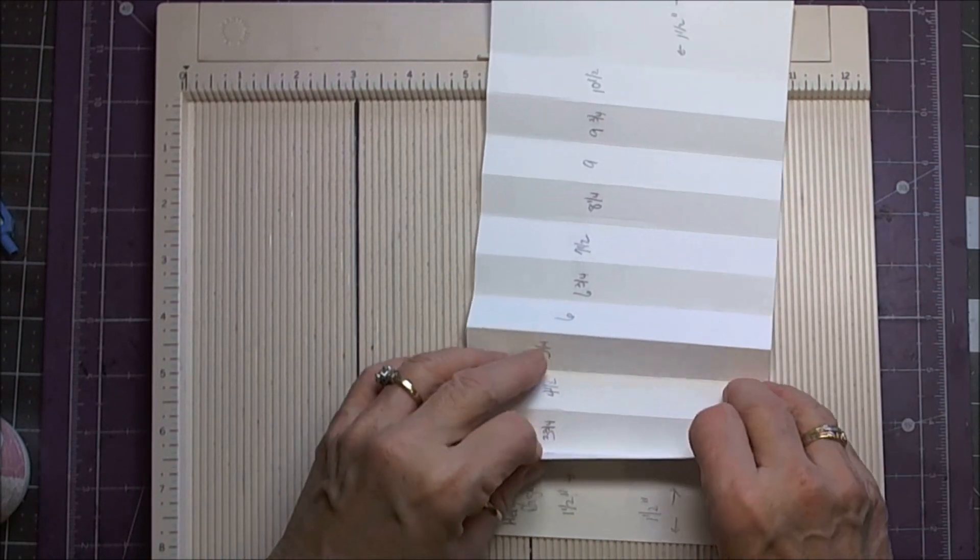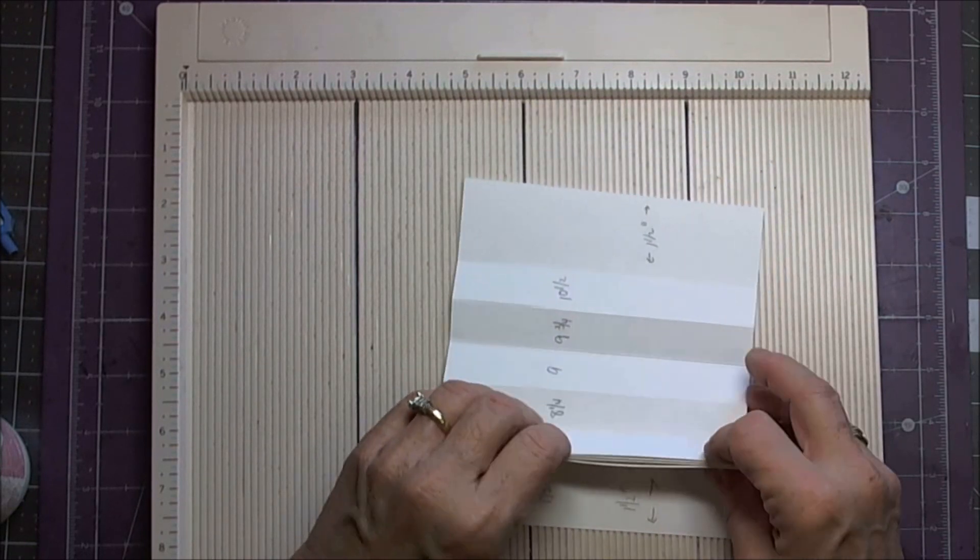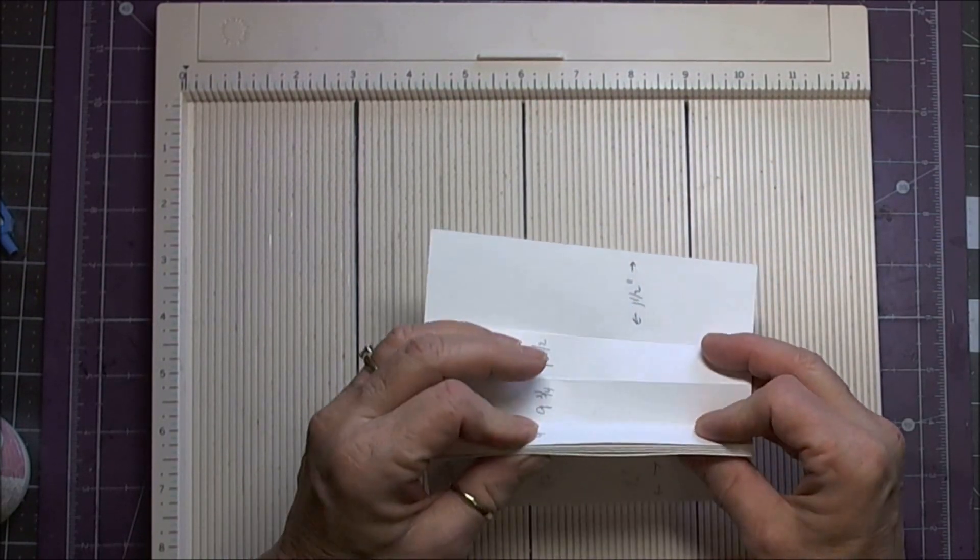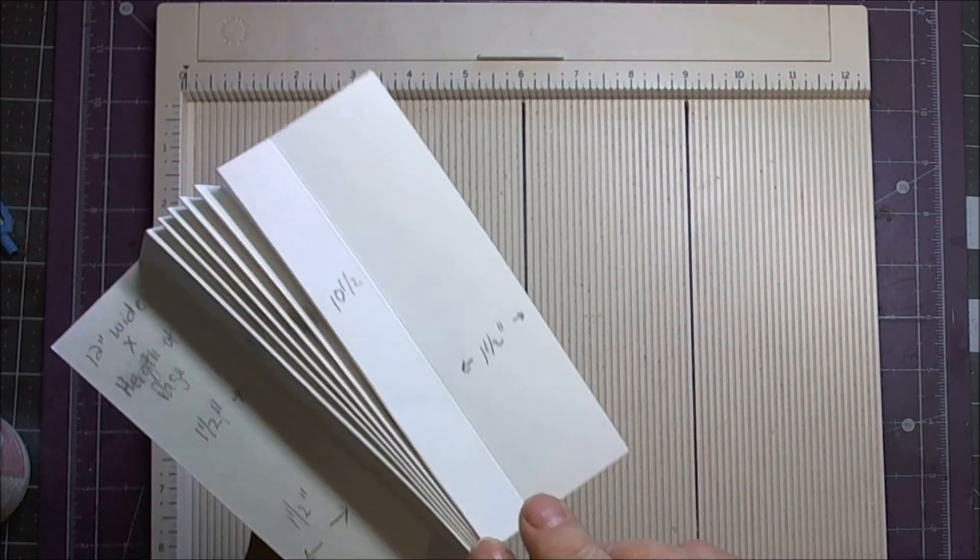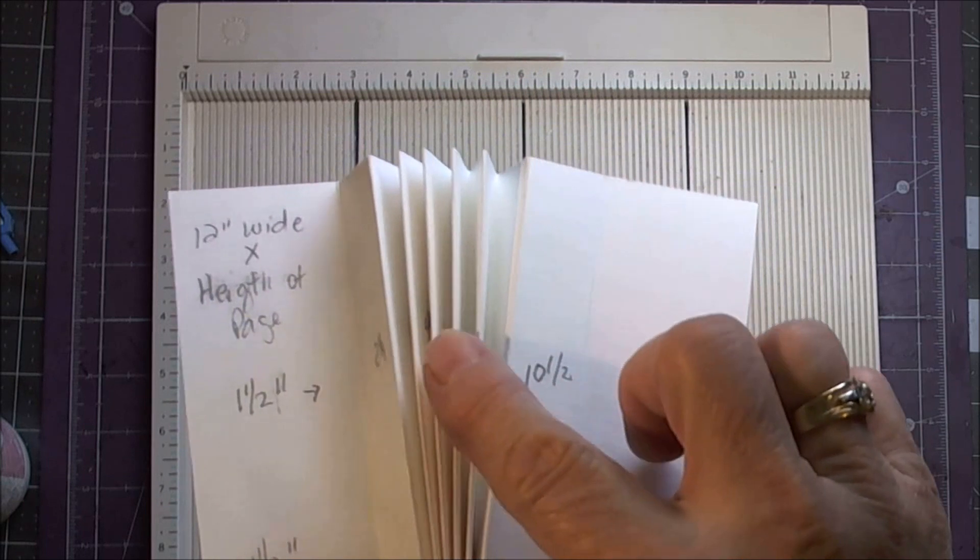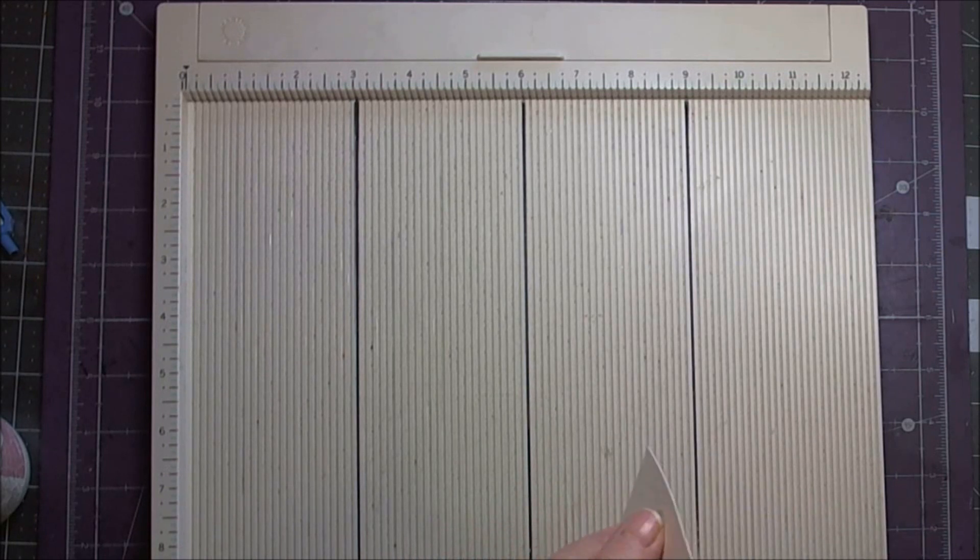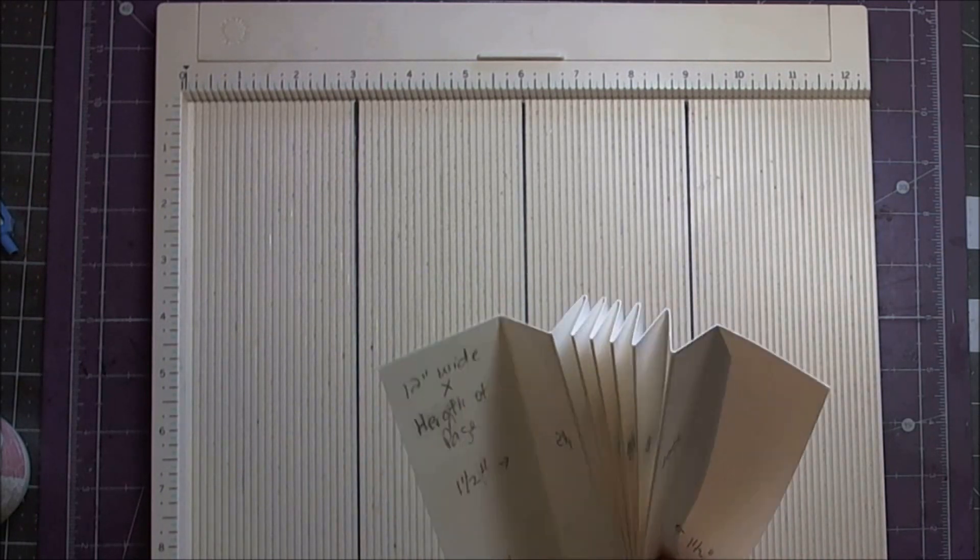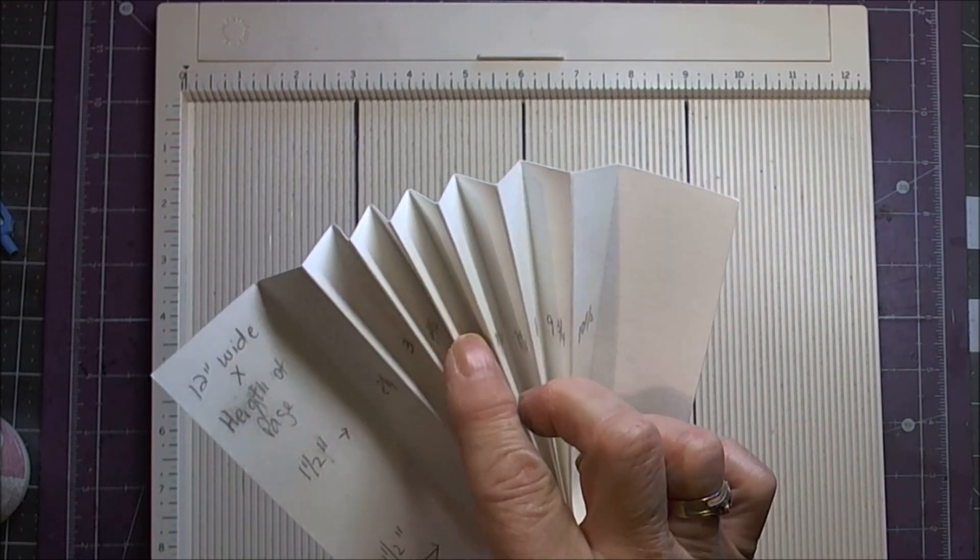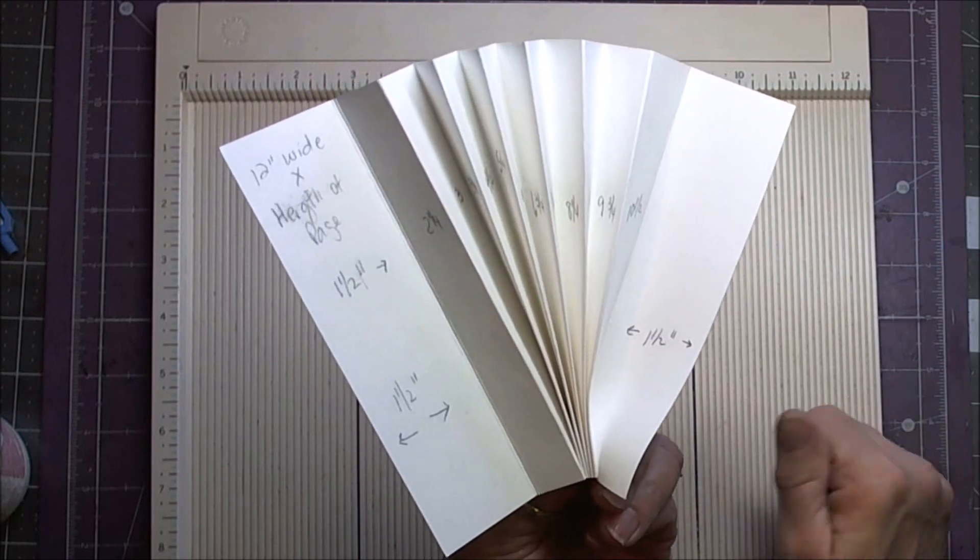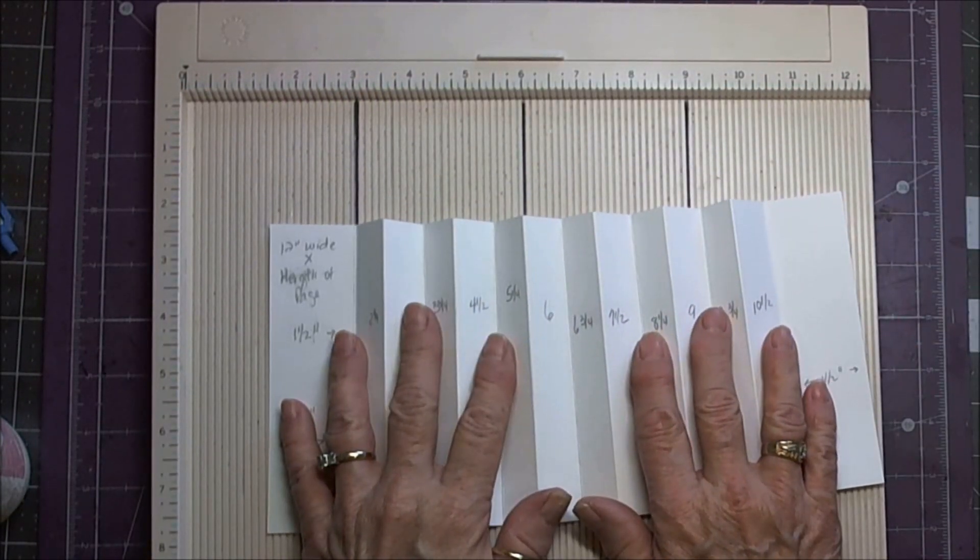And then we basically have one, two, three, four, five, get my fingers in here, and six. We have six scored lines, those are our pages. We have an inch and a half in the back, inch and a half in the front, and one, two, three, four, five, six pages. Are you with me so far? It's really so super simple and it makes a great, great book.